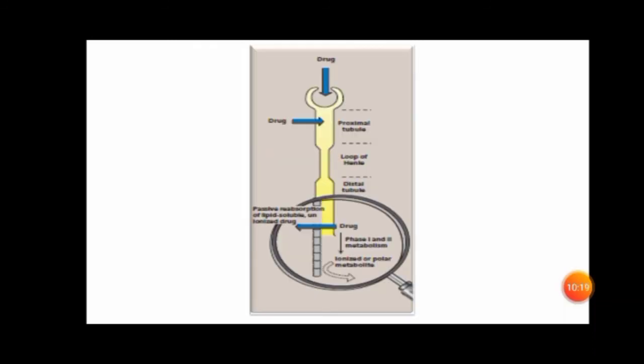Here you can see the drug entering the Bowman's capsule, with secretions occurring in the proximal and distal tubules and the loop of Henle. Lipid-soluble drugs undergo phase 2 metabolism in the liver, becoming polar and cleared from the body. The next topic will cover other routes of drug elimination. Thank you.